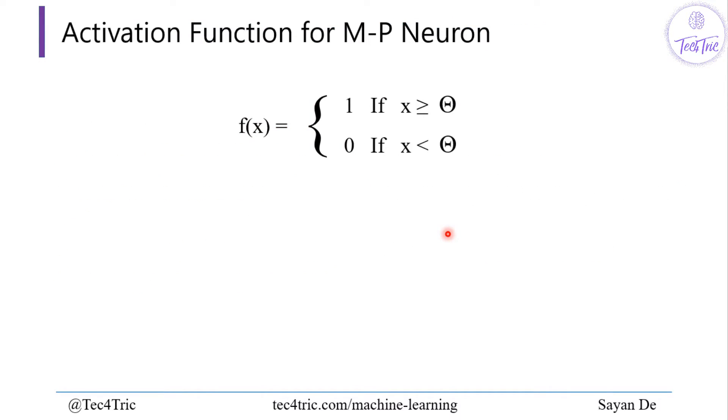Let us see the activation function for MP Neuron. This is how we can represent the activation function for MP or McCulloch-Pitts Neuron where f is the activation function and inside this we have x, which is the calculated net input or y_in. It will be 1 if x is greater than or equal to θ (theta), the fixed threshold value, or it will be 0 if x is less than θ.